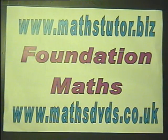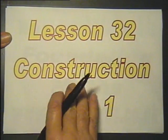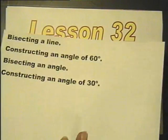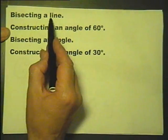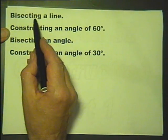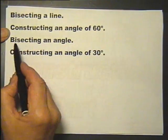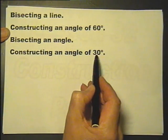MassTudor.biz and MassDVDs.co.uk Foundation Mathematics. Lesson 32 is on construction, and this is part one of Lesson 32. We've got several constructions to look at: bisecting a line, that means cutting in half exactly; constructing an angle of 60 degrees; bisecting an angle; and constructing an angle of 30 degrees.